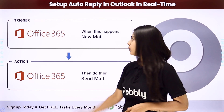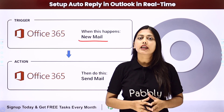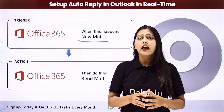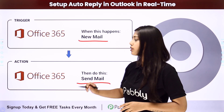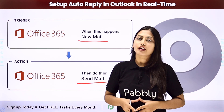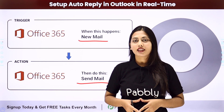In this automation, our trigger will be the new mail received in the application Office 365, and our action will be to send a reply to that mail via Office 365 only. Let us learn how to do that.